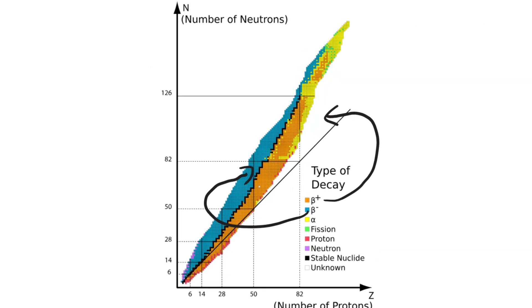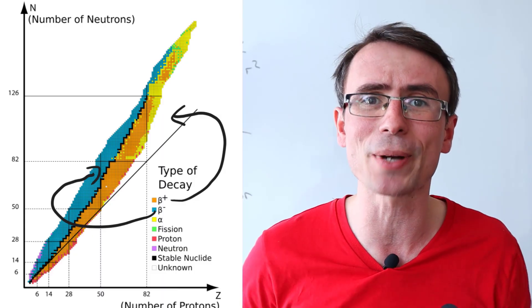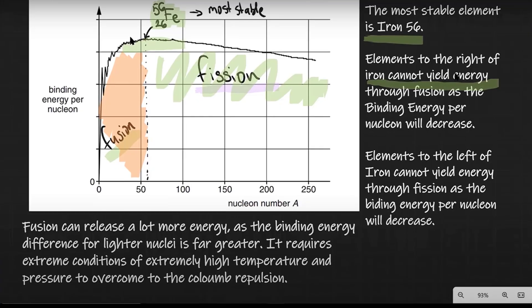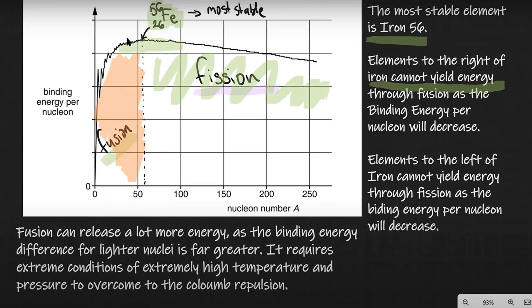For instance, something such as this patterns of stability graph in radioactivity, or this binding energy per nucleon graph in nuclear physics.